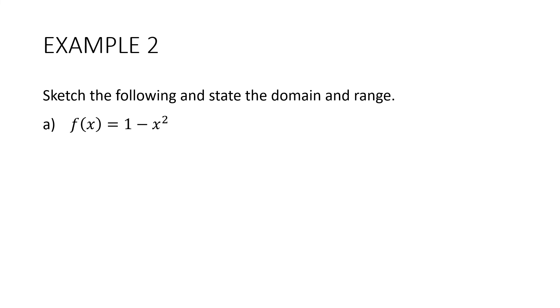Here's example 2. Sketch the following and state the domain and range. f(x) = 1 - x². So we've got a parabola here. It's concave down. We can tell that because we have a negative x². And we're going to move this up 1. So it's going to look like this. And the vertex there is (0, 1). Now parabolas have a domain of all real x. And that's no different here. So it goes from negative infinity to positive infinity. But our range is everything below and including 1. So it goes from negative infinity up to 1.